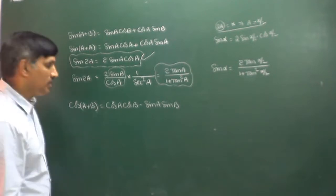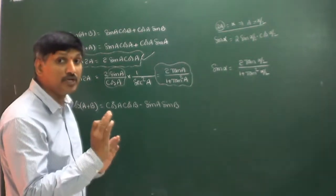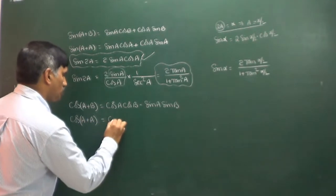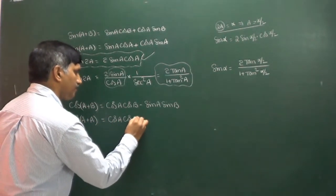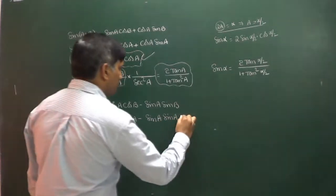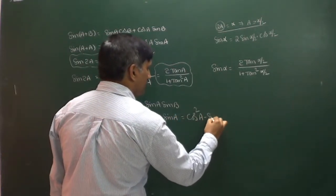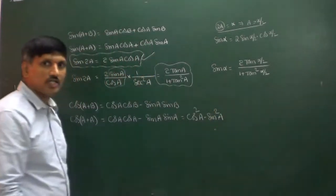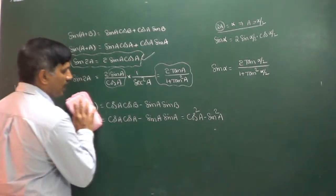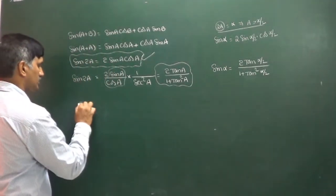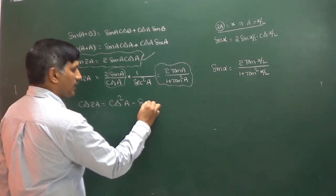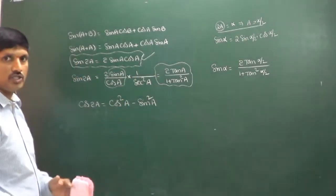Now for cos(A+B): replace B with A. Then cos(A+A) = cosA·cosA - sinA·sinA = cos²A - sin²A. So cos(2A) = cos²A - sin²A. That is the formula for cos 2A.